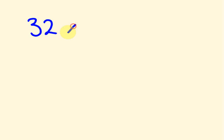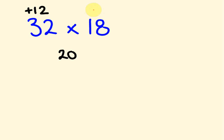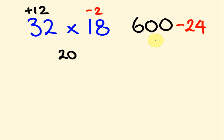A harder one: 32 times 18. We still use base 20. The 32 is 12 above 20, and 18 is 2 below. Cross addition: 18 plus 12 is 30. Double that: 60, so 600. Then multiply deviations: minus 2 times 12 is minus 24. So 600 minus 24 gives 576.